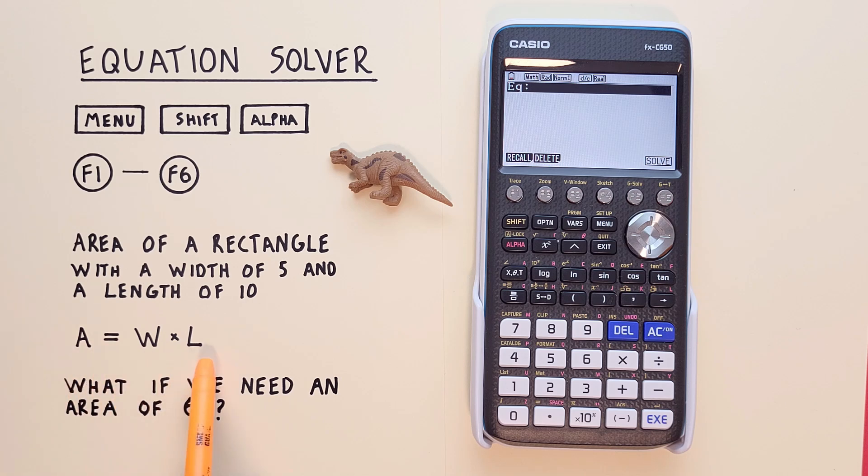We know this is our equation here. A or area is equal to W for width times L for length.